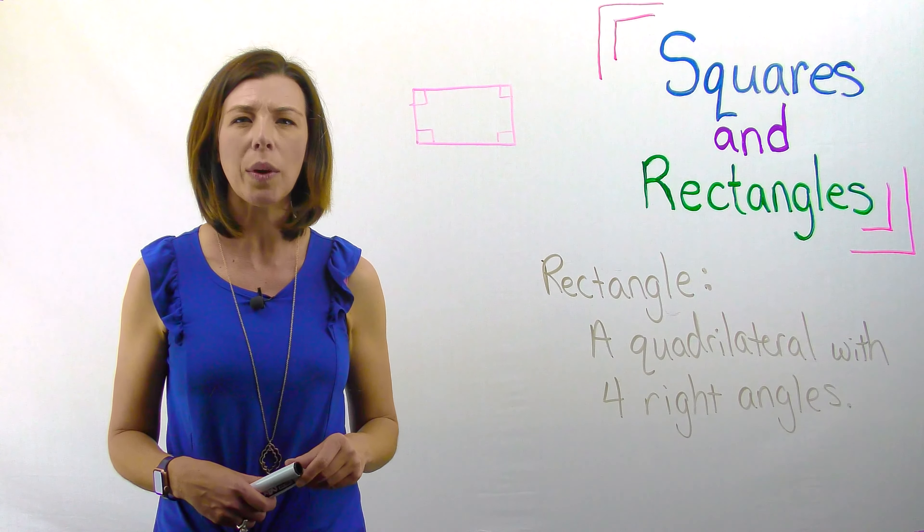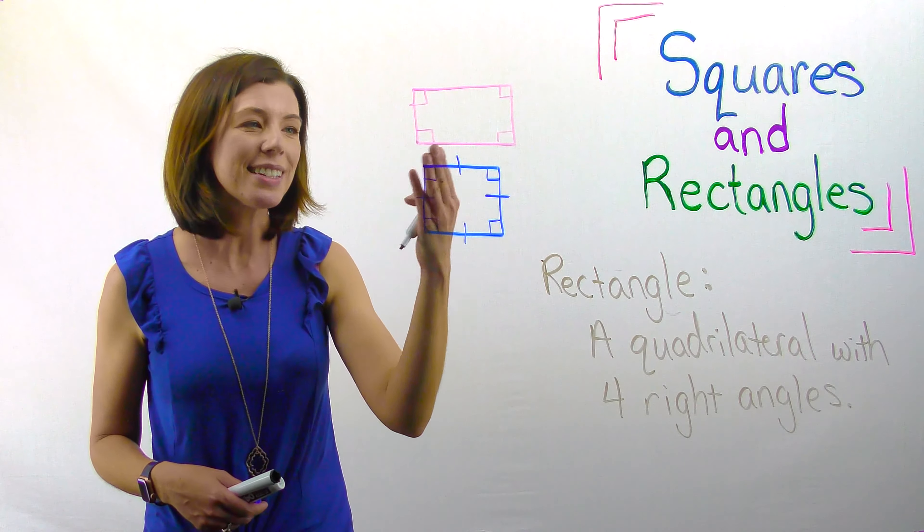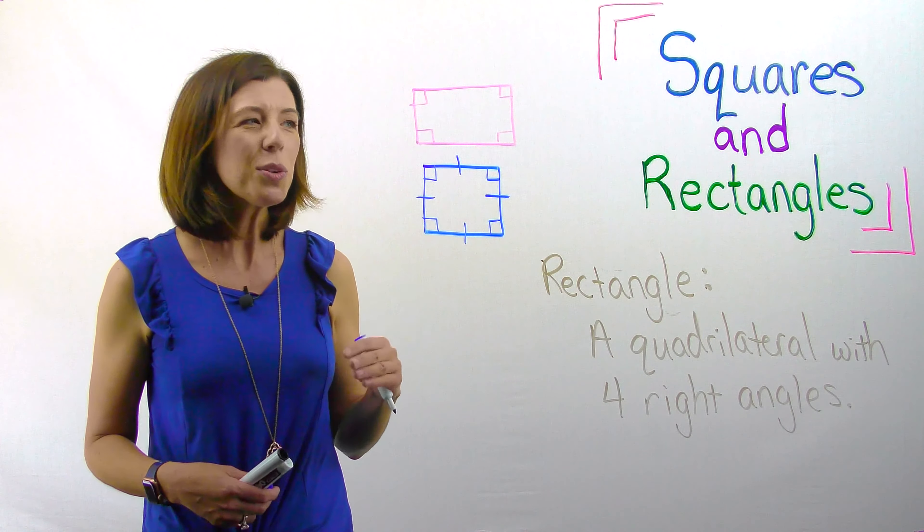Let's first think about what we know about rectangles. The definition of a rectangle is a quadrilateral with four right angles. I'm going to draw a picture just to make sure I'm envisioning the correct thing. First I know that it's a quadrilateral—that means it has to have four sides. Okay, so here's my quadrilateral with four sides. And I know that it needs to have four right angles.